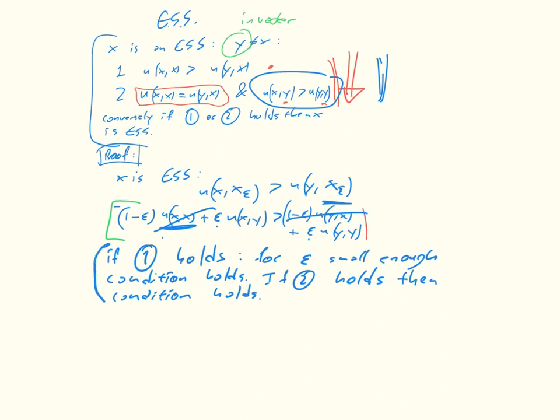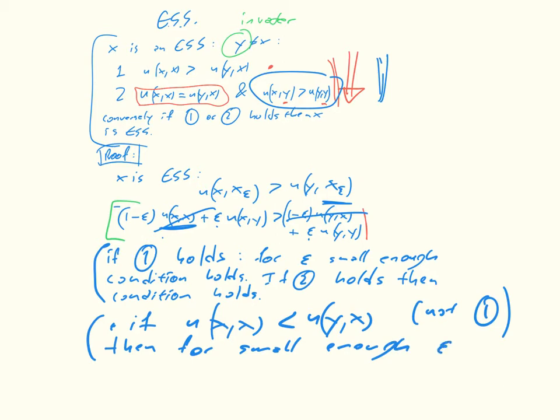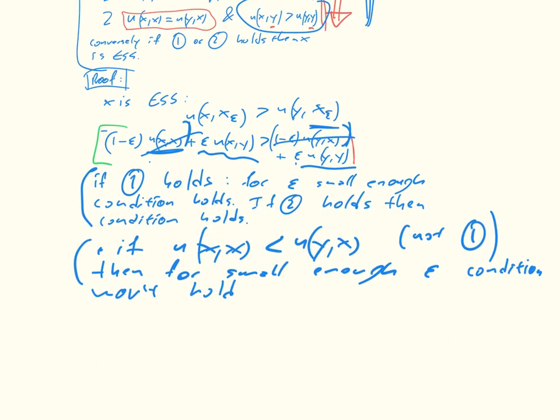If the utility of x,x is less than utility of y,x, so this is essentially not one. Then for small enough epsilon, because if the utility of x,x is less than the utility of y,x, then we can just make epsilon small enough that this term disappears, and all we're left with are this term and this term, and the condition won't hold. So condition won't hold.